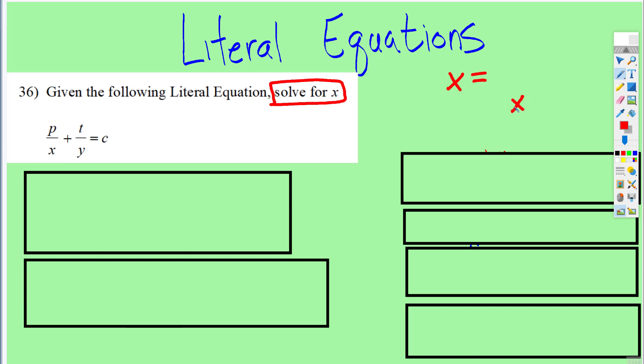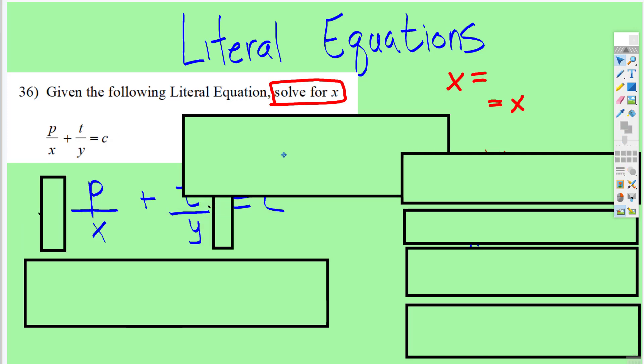So we know that we want the answer to be x is equal, or maybe x equals would be over on the other side. So somehow we need x to be in the numerator and we need to be by itself. Okay, so the first thing that you're going to do is notice